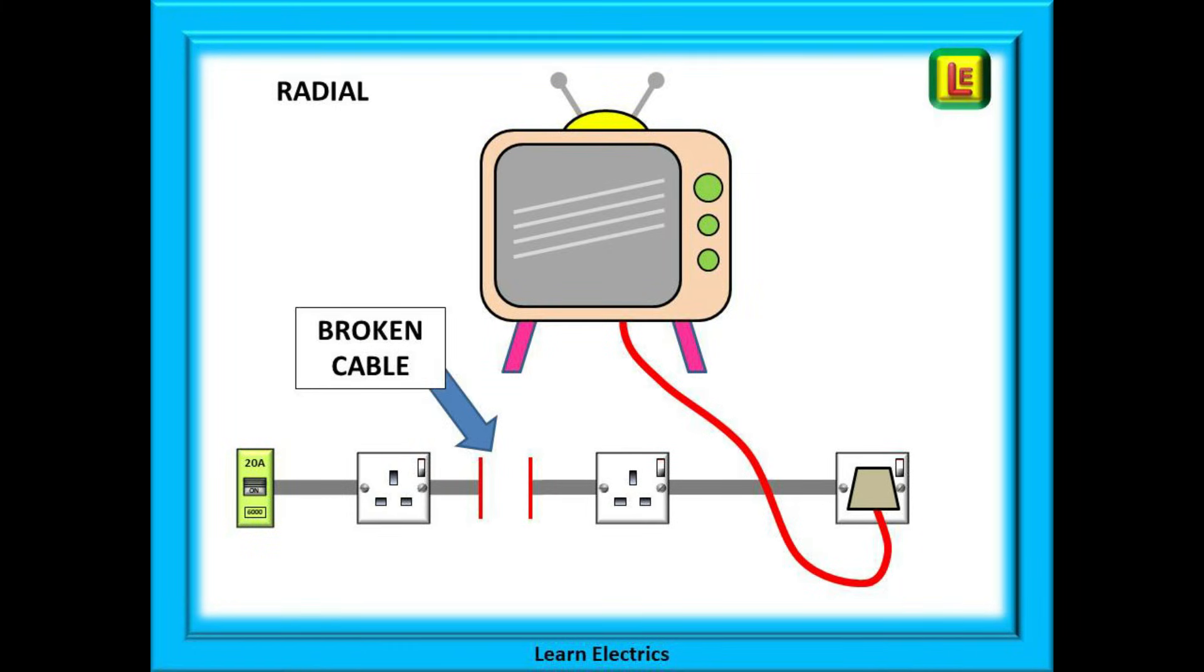Now, let's introduce a problem. Somehow the cable becomes broken. The circuit is no longer continuous. With a radial circuit, the television and everything else after the broken cable stops working. That part of the circuit goes dead and the customer knows about it straight away.